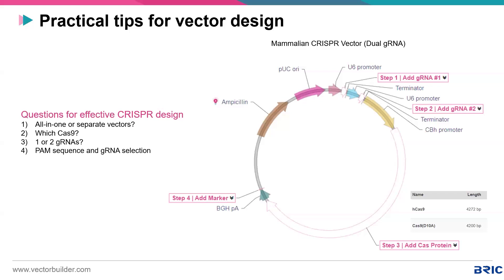The next question concerns PAM sequence and guide RNA selection — both are dependent on the type of Cas9 you use. For hCas9, one of the most common, the PAM sequence is NGG. For other systems, the PAM sequence differs. The guide RNA must also be compatible with the chosen Cas9 — for example, CRISPRa uses a slightly different guide RNA. It is extremely important to ensure the PAM sequence and guide RNA are compatible with the Cas9 you are using.